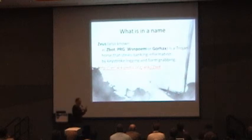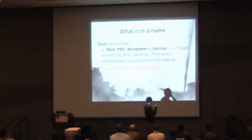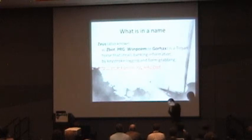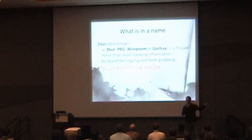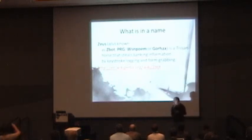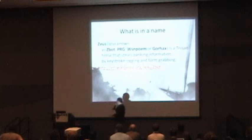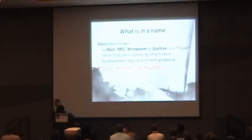They kind of came up with this as their first sentence — the various names for it. It's a Trojan horse that steals banking information by keystroke logging and form grabbing. That's a good description of what it did back when it came out, around 2007. And we've progressed way past that. The tools progressed way past that, and there's a lot more capabilities in Zeus now than what is indicated there, and that's what we want to talk about today.